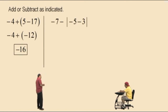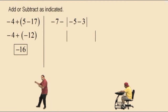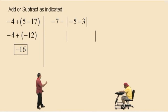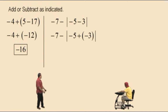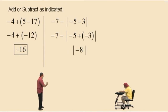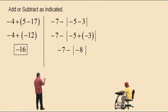Negative 7 subtract the absolute value of negative 5 subtract 3. Order of operations says we have to do the absolute value first. Negative 5 subtract 3 — some of you use the definition of subtraction: negative 5 subtract 3 is the same as negative 5 plus a negative 3, which is negative 8. Bring down your work. What's the absolute value of negative 8, Charlie? 8.